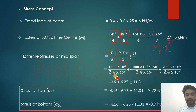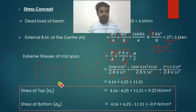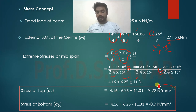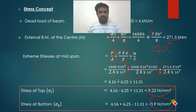After substituting all values, the direct stress is 4.16 N/mm². Combining the direct stress, eccentricity stress, and bending stress at the top and bottom fibers, the stress at the top fiber is 9.22 N/mm² and the stress at the bottom fiber is -0.9 N/mm².